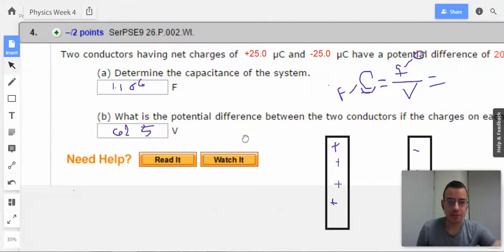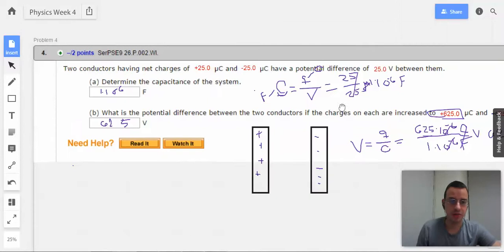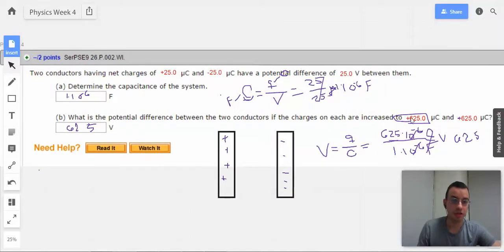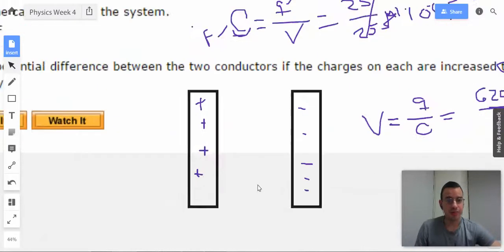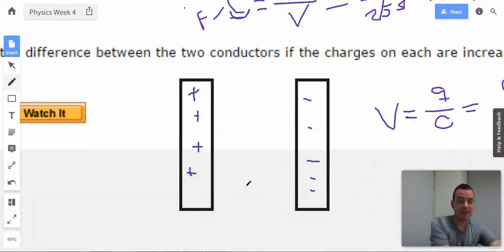625 volts, there we go. The idea here is you're supposed to look at this and be like, alright, if we have drastically more charges, we're going to have drastically greater voltage. One way that makes sense is voltage is the measure of energy, potential energy, electric potential. The energy it would take to move a charge from one side to the other.